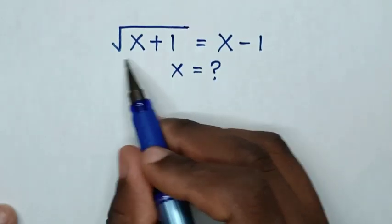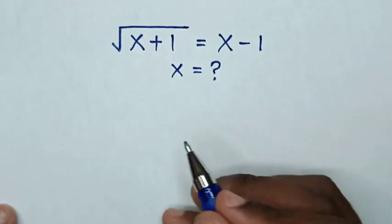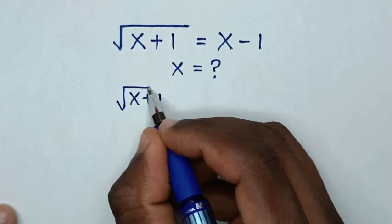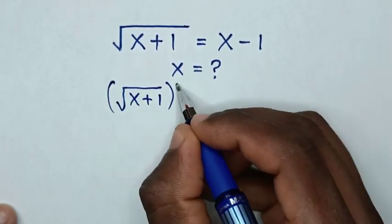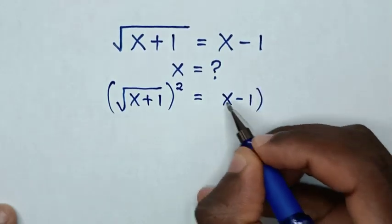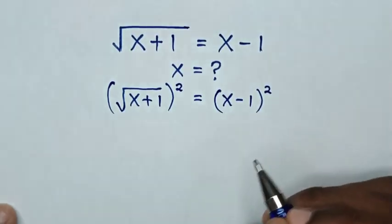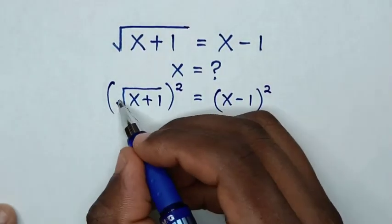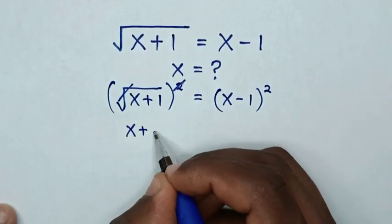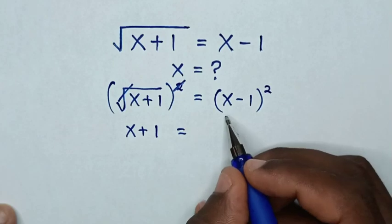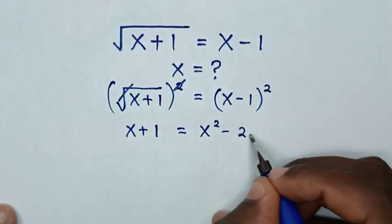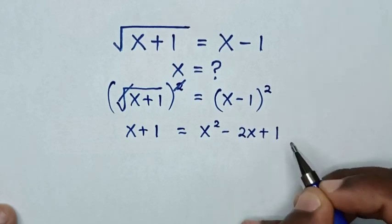So first we square both sides. We have square root of (x plus 1) bracket squared, is equal to (x minus 1) bracket squared. The square root cancels with the square, so it will be x plus 1 is equal to (x minus 1) squared, which is x squared minus 2x plus 1.